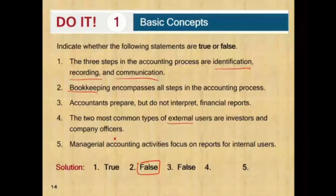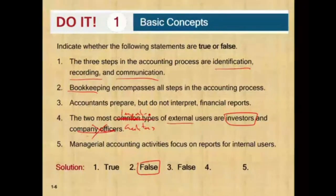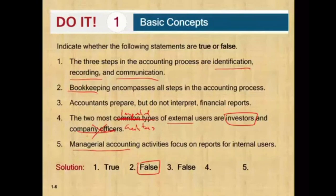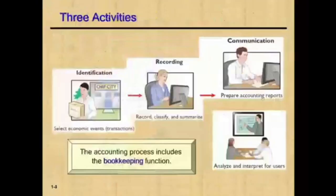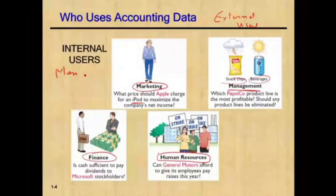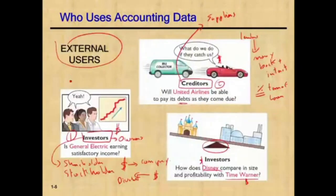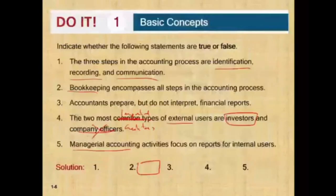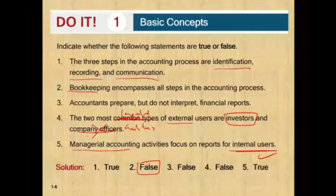Number four — the two most common types of external users are investors and company officers. Investors is correct, but company officers should be replaced with creditors — false. Investors and creditors are our two most important external users and our main audience. Number five — managerial accounting activities focus on reports for internal users. That is a true statement. When you prepare information for internal users the process is called managerial accounting, and when you prepare information for external users it's called financial accounting — which is the course you are likely taking now.